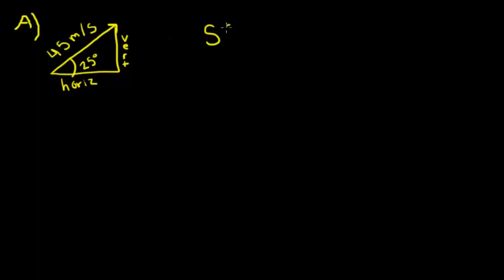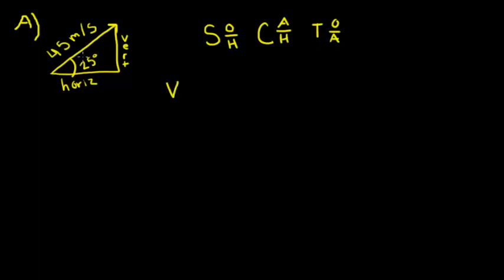To solve problems like this, we use SOHCAHTOA. Sine is opposite over hypotenuse. Cosine is adjacent over hypotenuse. And tangent is opposite over adjacent. To find the vertical, which we'll call V, we know the angle and the hypotenuse, and we're looking for the opposite side, so we'll use sine.